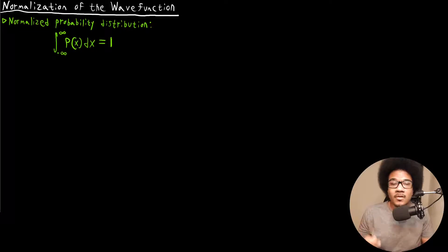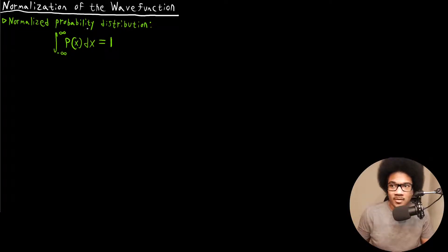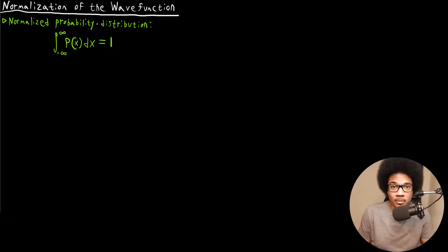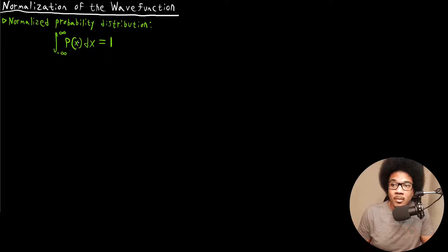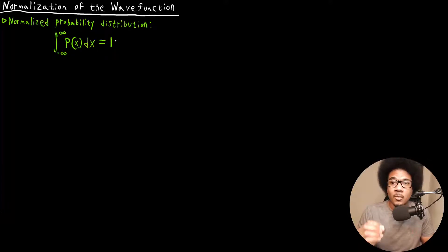In order to talk about things in a statistical, probabilistic way, we have to have a normalized probability distribution. That normalization is given by this integral shown here. Basically, if we have some probability distribution P of X and we integrate over all space — a one-dimensional integral over X from negative infinity to positive infinity — that integral should be equal to one.